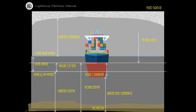Actual clearance is measured from the actual depth to the underside of the bridge structure. Air draft is the difference between the overall height of the vessel and the vessel's draft — this is also called the vessel's height. Vertical clearance is the difference between the actual clearance and the air draft.